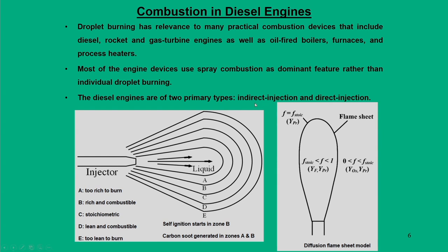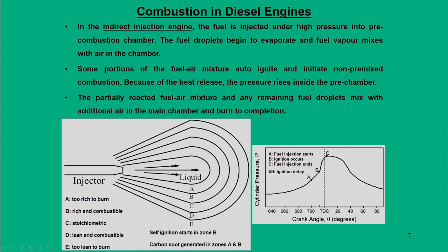In diesel engines there are two types of fuel injection: indirect injection and direct injection. In indirect injection, fuel is injected under high pressure into a pre-combustion chamber, droplets begin to evaporate, fuel vapor mixes with air, some portion auto-ignites initiating non-premixed combustion, pressure rises in the pre-combustion chamber, and partially reacted fuel-air mixture mixes with additional air in the main chamber.